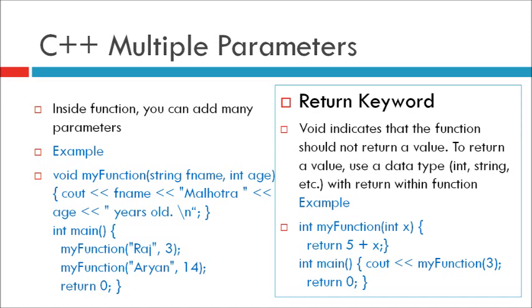Instead of void, use the return keyword inside the function. For example, integer myFunction in bracket integer x. In body of the function, return 5 plus x. In main function, cout myFunction parameter passed to this function is 3.